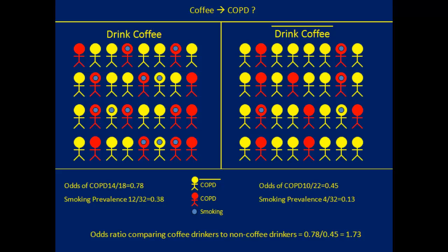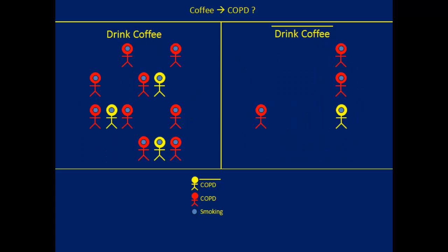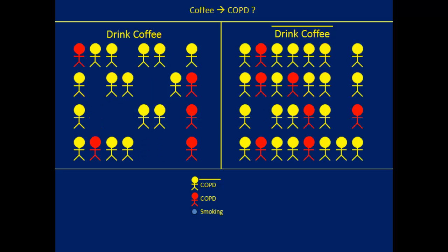If we only look at non-smokers, smoking is balanced on both sides — exactly 0% smoking among both coffee drinkers and non-coffee drinkers. Likewise, if we look only at smokers, smoking is again balanced on both sides at exactly 100%. So any difference in COPD between the coffee-drinking and non-coffee-drinking groups cannot be due to smoking in either case.